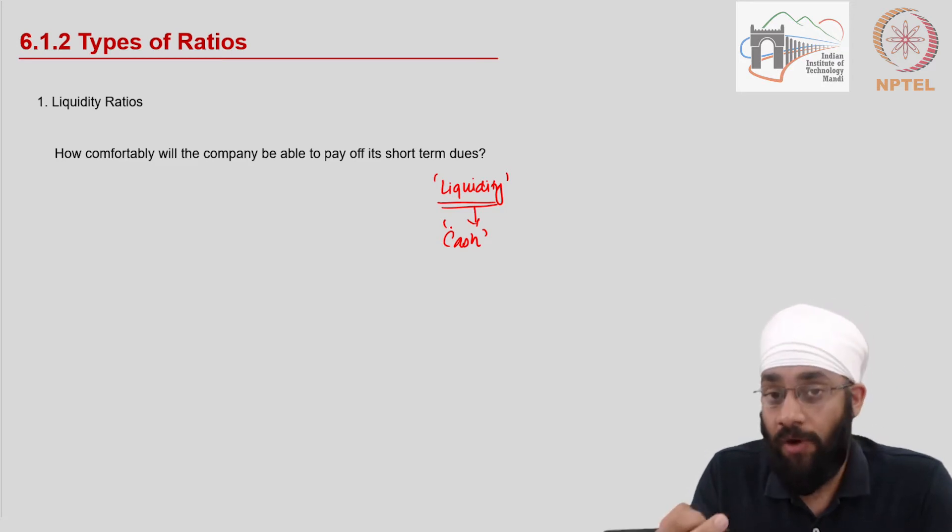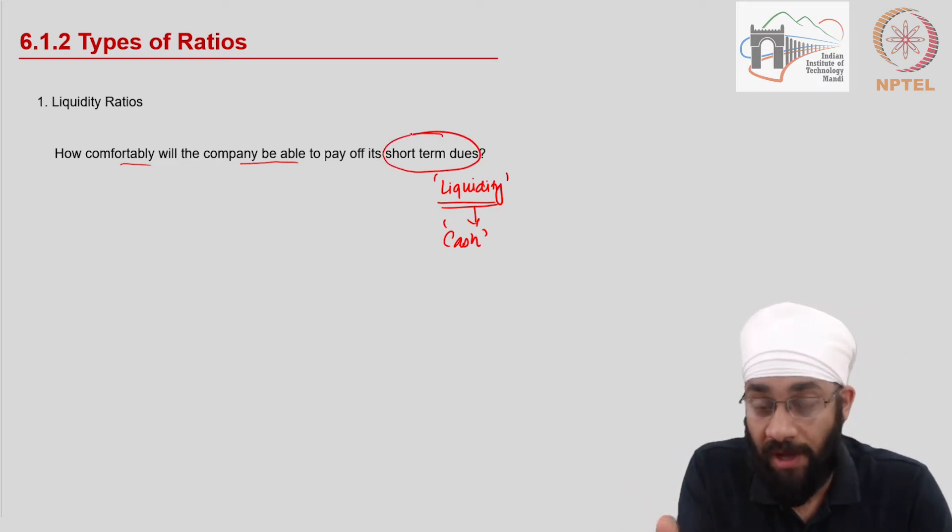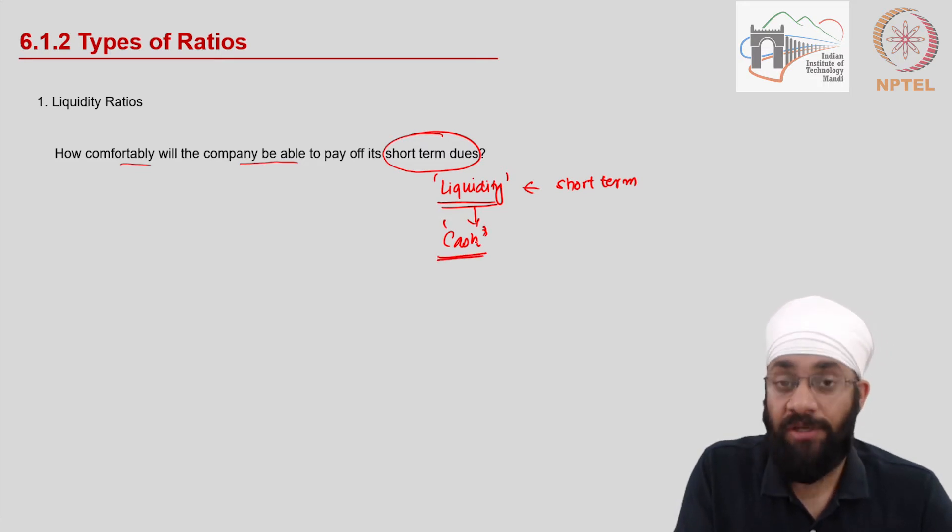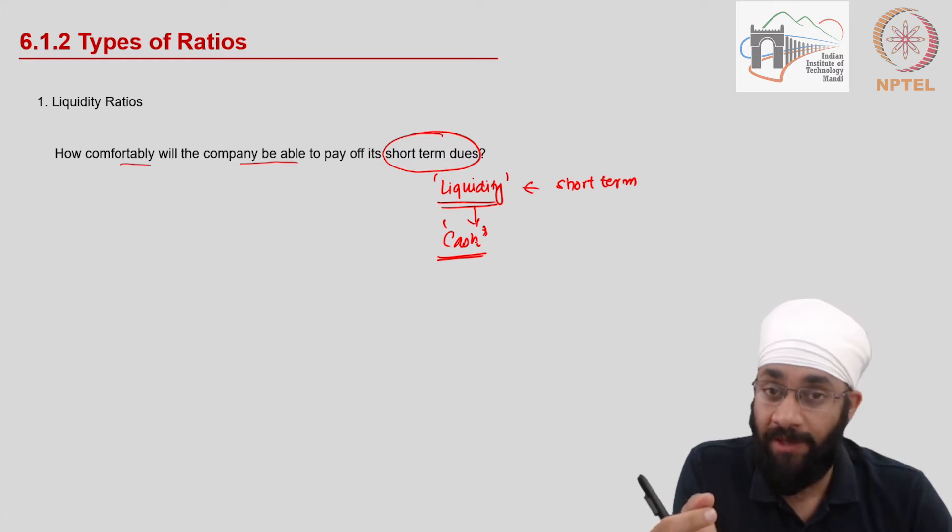In context of a specific company, the liquidity refers to the cash position of the business. What is the ability of the business? How comfortably will the company be able to pay off its short term dues? Liquidity in the short term refers to having cash or bank balance in hand to pay off your short term liabilities. Short term liabilities mean whatever is due in less than one year.